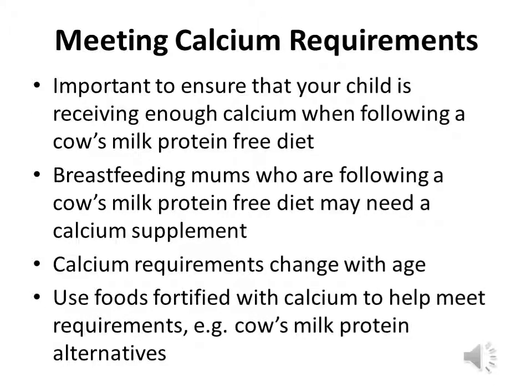Cow's milk is a really good source of calcium, so it's important to get adequate calcium when avoiding it. Many alternative products are fortified with calcium — check the labels. The diet sheet you received has a full page on calcium requirements by age, so you can work out how much calcium is in different products and how much your child needs. If breastfeeding, your calcium requirement is very high — 1,250 milligrams, roughly five portions of dairy. It's unlikely you'll achieve this through alternatives alone, so a calcium supplement would be needed.